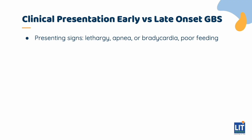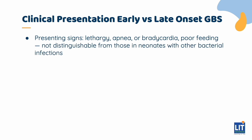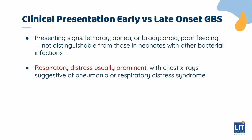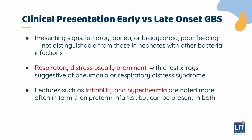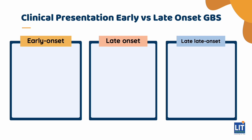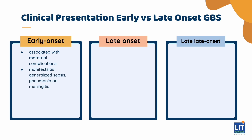Presenting signs such as lethargy, apnea, bradycardia, and poor feeding are not distinguishable from those in neonates with other bacterial infections. Respiratory distress is usually prominent, with chest x-rays suggestive of pneumonia or respiratory distress syndrome. Features such as irritability and hyperthermia are noted more often in term than preterm infants but can be present in both. Early-onset GBS is commonly associated with maternal complications and commonly manifests as generalized sepsis, pneumonia, or meningitis.